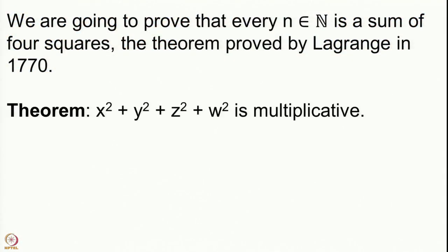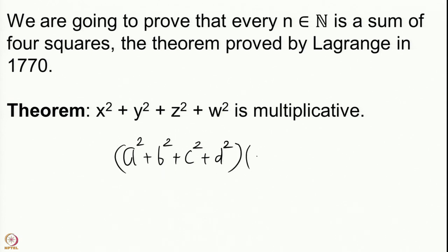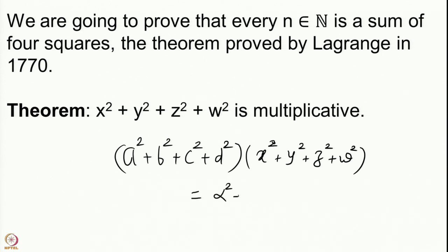Let us see those statements. The first one we have proved is that this form is multiplicative — that means if we take 2 numbers which are sums of 4 squares, say a² + b² + c² + d² multiplied by x² + y² + z² + w², then this is again a sum of 4 squares: α² + β² + γ² + δ². This is true for sums of 2 squares, which we have proved, and it is also true for sums of 4 squares, but not for sums of 3 squares.